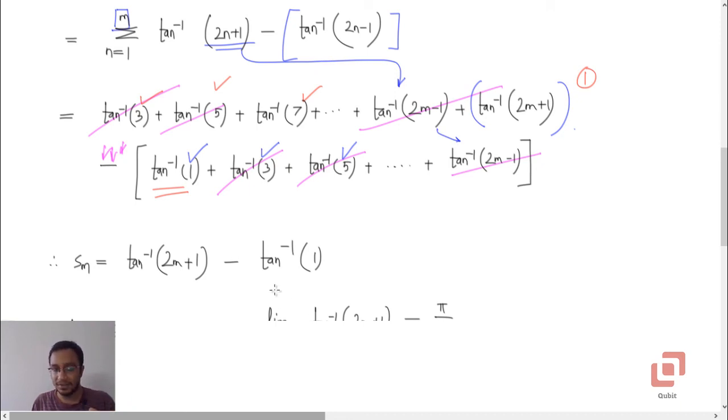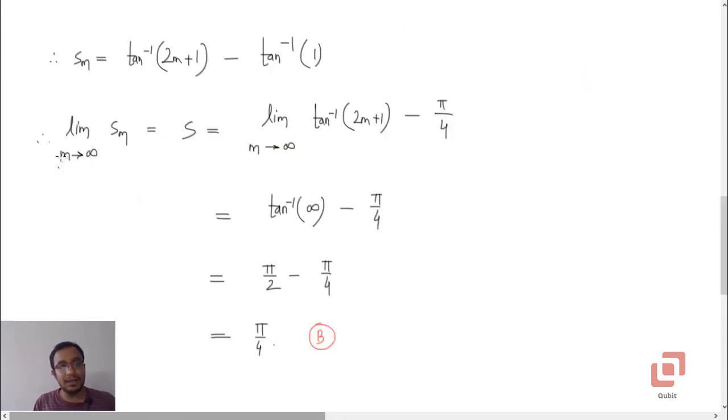We have to now take the limit of this, provided that this limit exists. So let's allow m to tend to infinity and try to determine the limit of sm, and that is going to be the sum s.